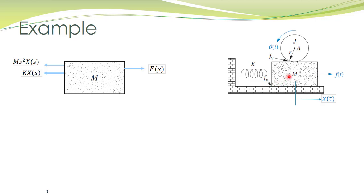If this mass moves towards the right, the direction of the force due to friction will be towards the left, and the magnitude of that force will be proportional to the linear velocity of the mass, shown as FV·S·X(S). There is also a force due to the friction between the disk and the mass.